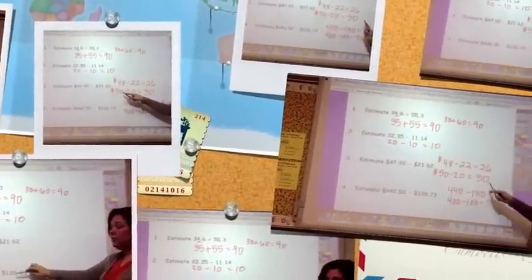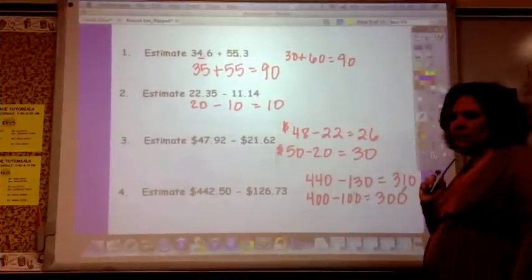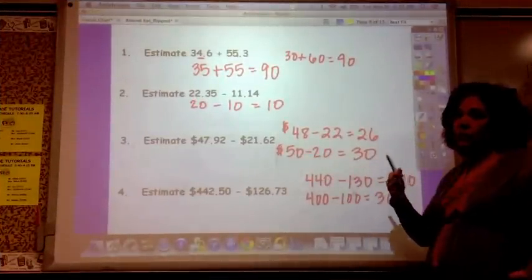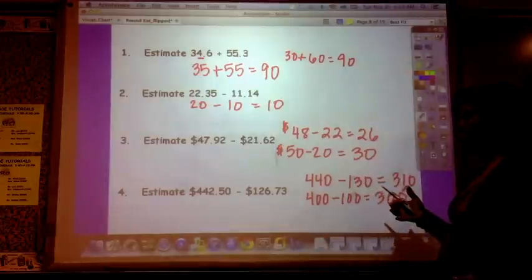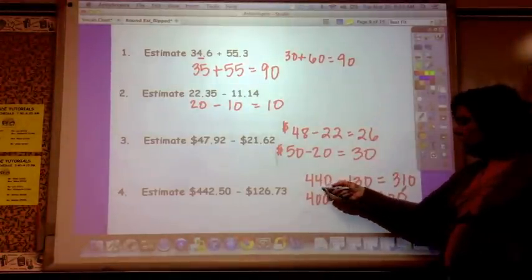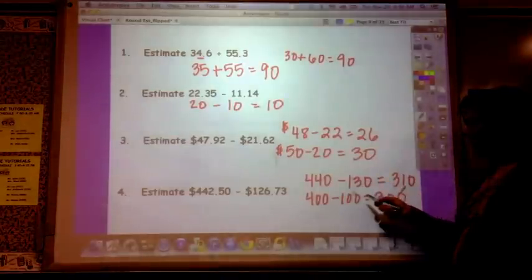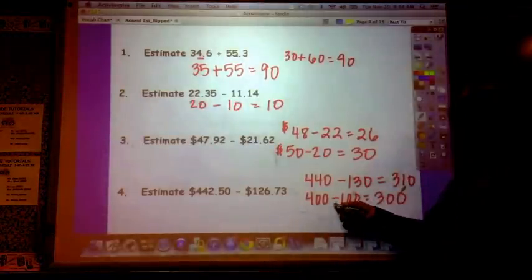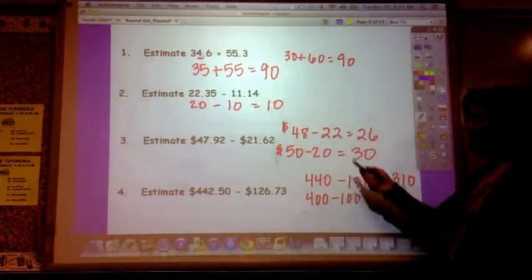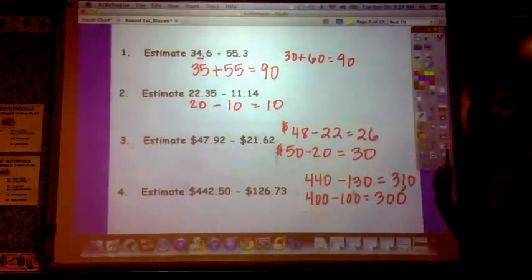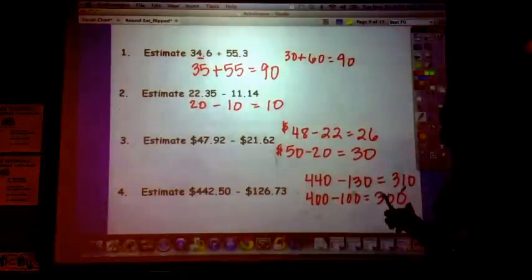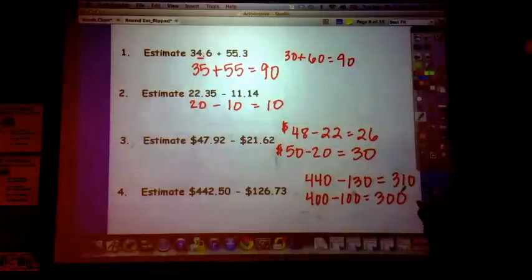So if you did it to the nearest dollar, you'd get twenty-six dollars. If you did it to the nearest ten dollars, you'd get thirty dollars, which twenty-six and thirty are still pretty close together. If you do to the nearest ten dollars on this one, you'd get three hundred ten dollars. If you do it to the nearest one hundred dollars, you'd get three hundred dollars. So, a lot of easy math going on. Like I said, you should be able to do these in your head because these are the kinds of decisions you make whenever you go out to buy something.